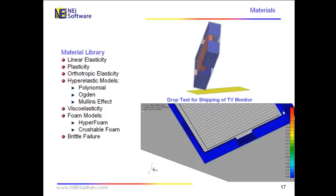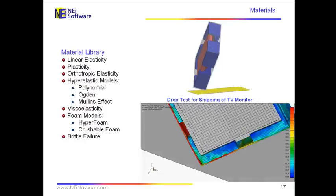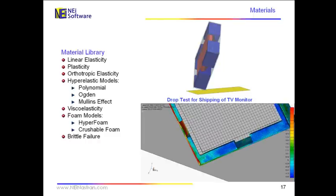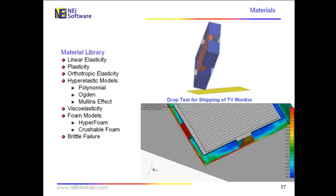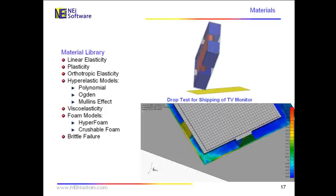NE High Explicit has a very large library of materials. We have linear elasticity, we have plasticity, we have orthotropic elastic materials, we have hyperelastic materials for rubber-like materials, and we have viscoelasticity and foam models.